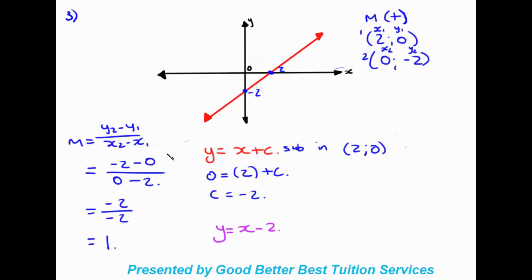Our final equation is y equals x minus two. To recap the steps: work out the gradient first, write out the initial equation with the gradient included, choose any one of the two given points and substitute in to find c — the y-intercept — then write out the final equation. That's all for today's recording, thank you very much for joining us.